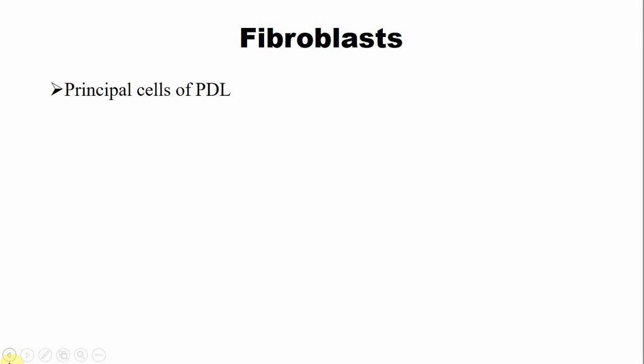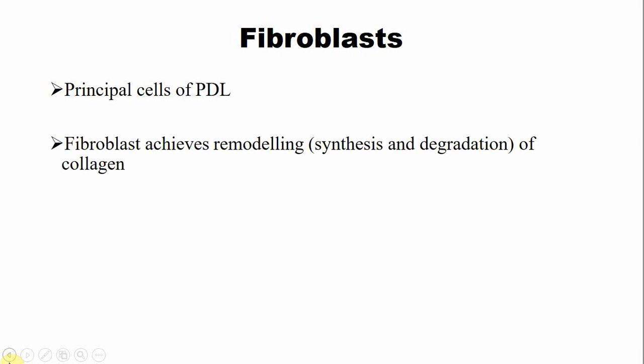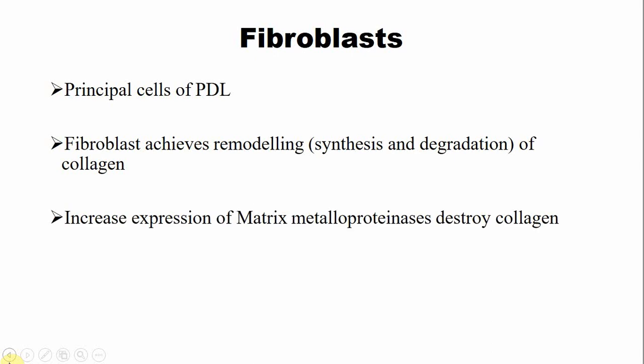The first cell family is fibroblasts. Fibroblasts are the main cells present in the greatest number in the PDL — these are the principal cells of the PDL space. Fibroblasts are associated with formation of collagen fibers and at the same time have a degradation function for collagen. There is increased expression of matrix metalloproteinases (MMPs) during periodontal disease, which may lead to destruction of the collagen fibers. While MMPs are normally expressed by fibroblasts during normal degradation, overexpression in periodontal disease may lead to fast destruction of the collagen fibers.